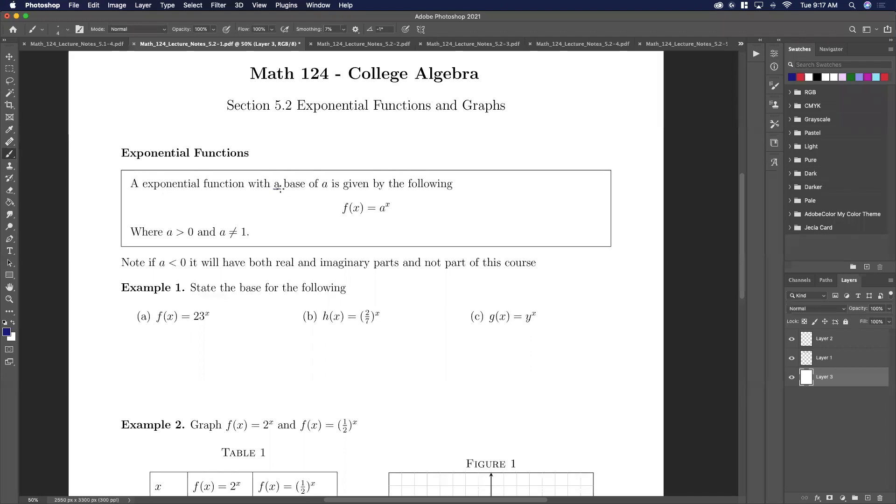An exponential function has a base a and x is the exponent. For now we're going to say a is positive and a is not equal to 1. If a is not positive, things get funny. If a equals 1, it's boring, because 1 to any power is still just 1. So a has to be positive. Can we do negative stuff? Yes. Are you going to do negative stuff? No. So here, just state the base. The base of a is just 23. Here the base is 2 sevenths, and so it's actually everything. The base can be a variable, it can be just y.